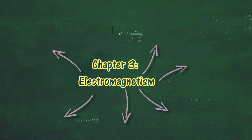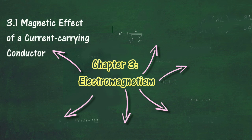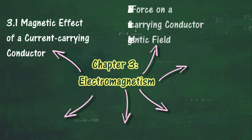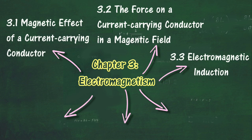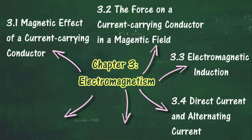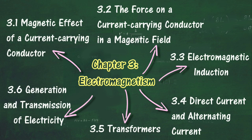In this chapter, we will learn and understand more about Electromagnetism. There are 6 main sections in this chapter: 3.1 Magnetic Effect of a Current-Carrying Conductor, 3.2 The Force on a Current-Carrying Conductor in a Magnetic Field, 3.3 Electromagnetic Induction, 3.4 Direct Current and Alternating Current, 3.5 Transformers, and 3.6 Generation and Transmission of Electricity.